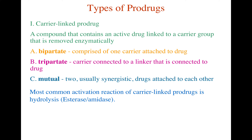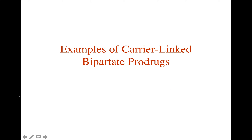The carrier-linked prodrugs, which we will be discussing in this lecture, are divided into three types: bipartite, tripartite, and mutual. In this lecture, we will only be discussing the bipartite carrier-linked prodrugs, which is comprised of one carrier attached to the drug. In the next lecture, we will discuss the tripartite and mutual prodrugs. Let's look at some examples of carrier-linked bipartite prodrugs — a carrier directly conjugated to our active molecule.